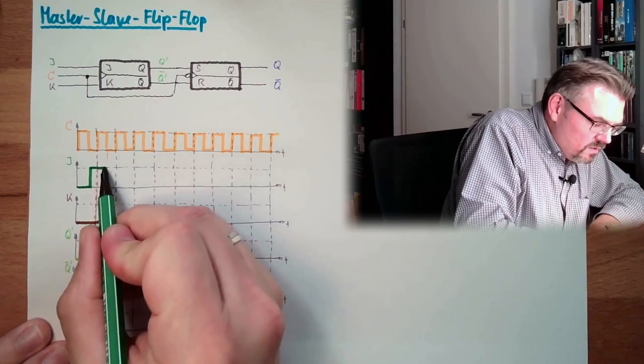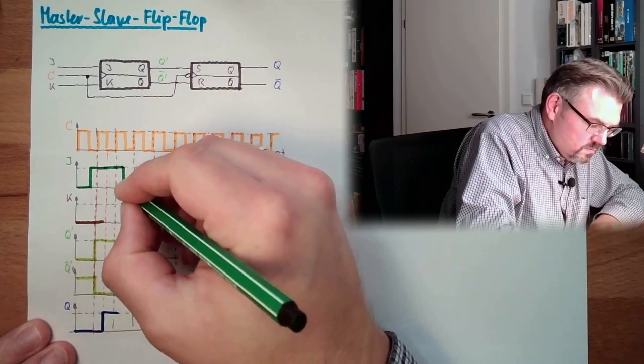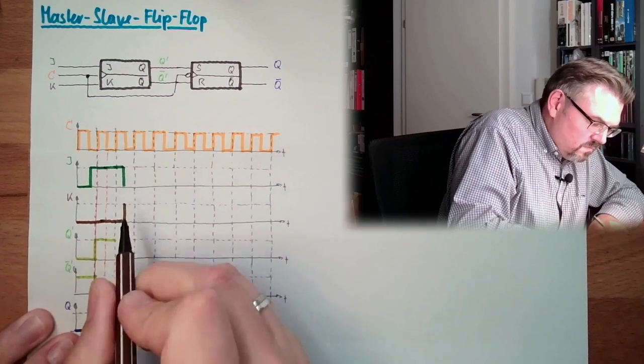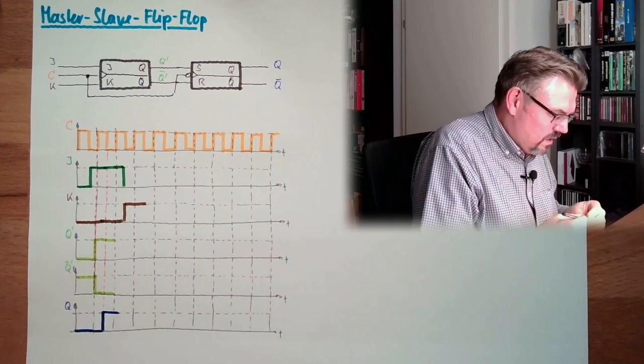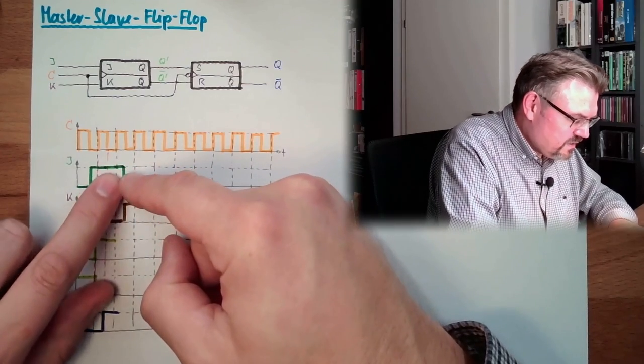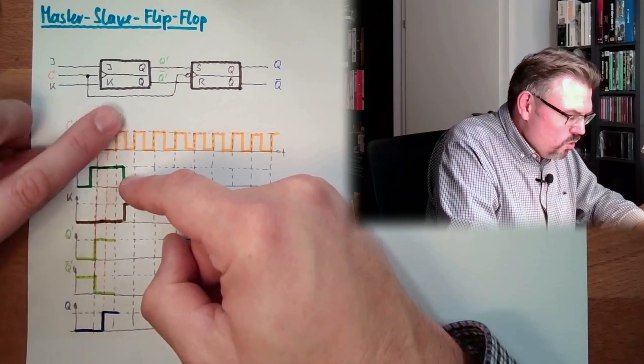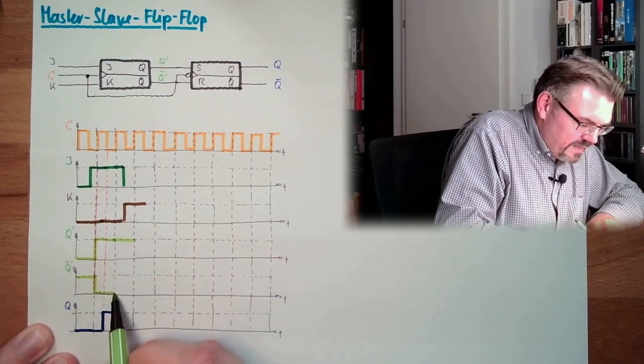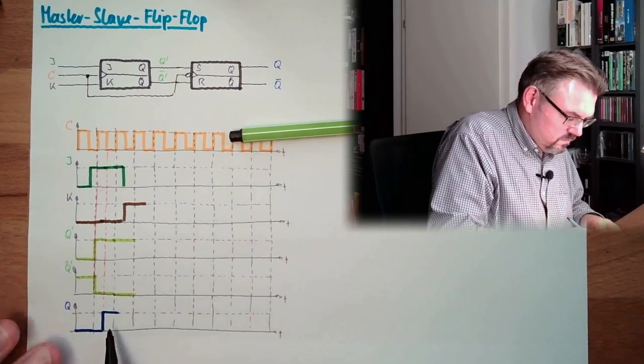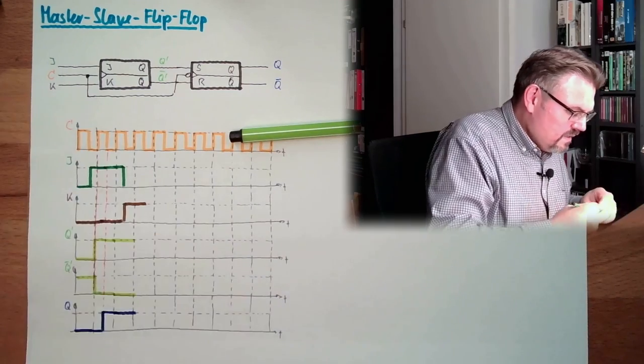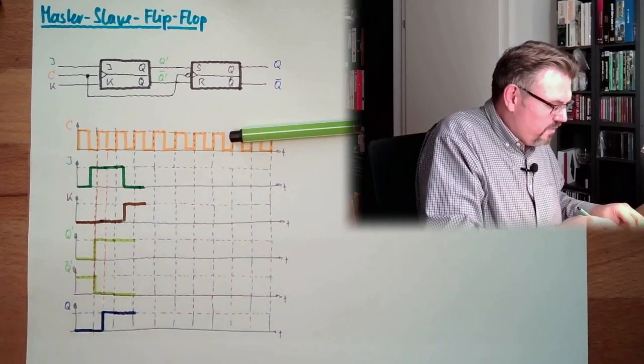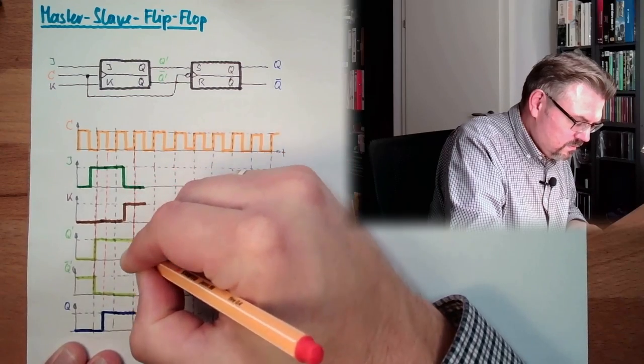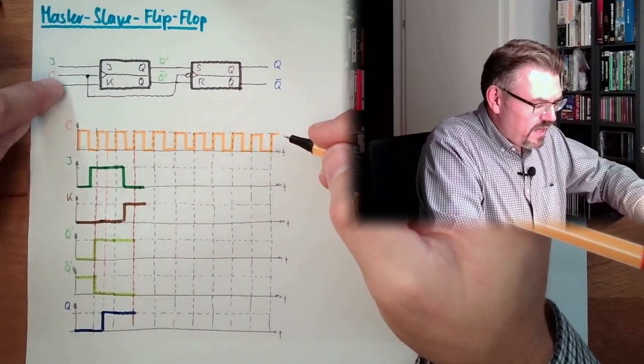What if K stays on? If J stays on, this will not change. Because we will simply stay here internally. And also externally, we have changed. Now K is one. And at this rising trigger here, we will switch K to not Q.